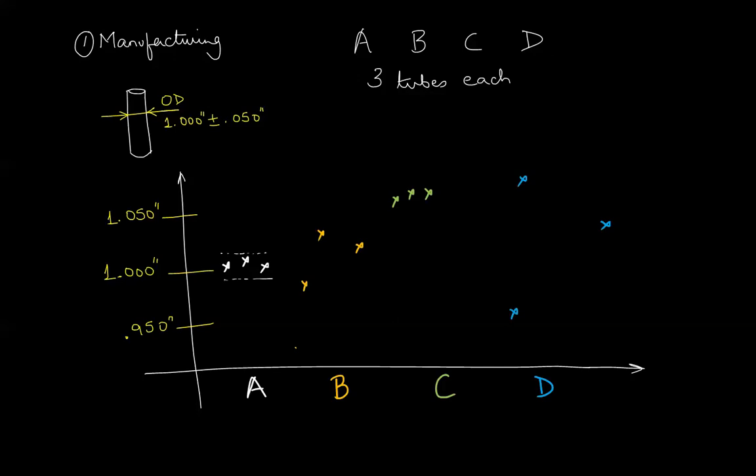Look at Company A's tubes. Not only are they close to the target they are also close to each other. Company A is accurate and precise.